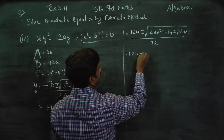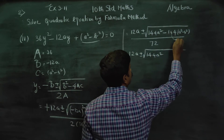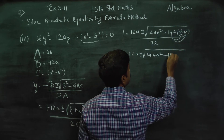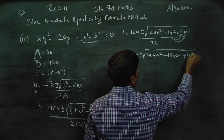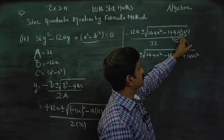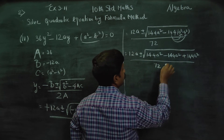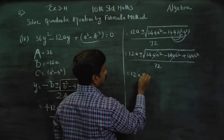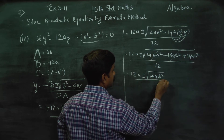Then 12A plus or minus square root of 144A squared minus 144A squared. Minus into minus gives plus 144B squared. So we are left with the square root of 144B squared, divided by 72. Common terms cancel out.